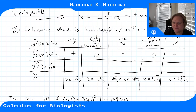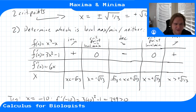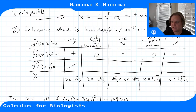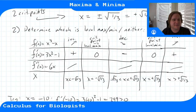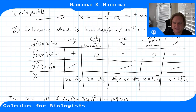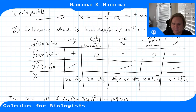Alternatively, we can check the sign of the second derivative at the critical points themselves. That tells us the concavity at each point, which alone reveals whether it's a local max or min—without needing to do the full first-derivative sign check.